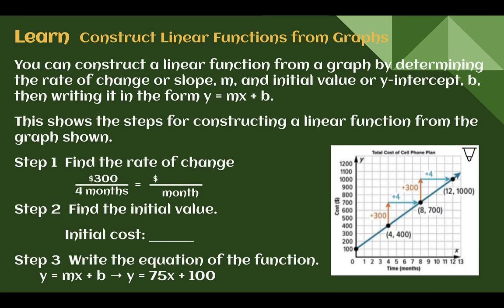Let's learn to construct linear functions from graphs. You can construct a linear function from a graph by determining the rate of change or slope (m) and the initial value or y-intercept (b), then writing it in the form y equals mx plus b — that's our slope-intercept form. So we really only need to find m and b; y and x are already part of the formula.